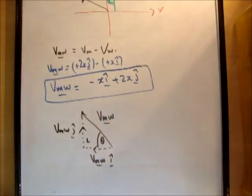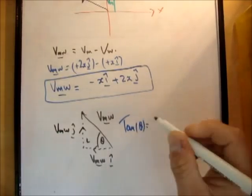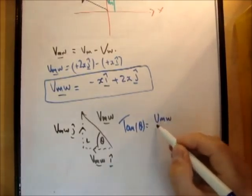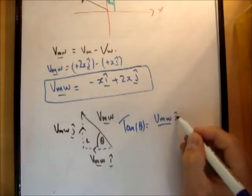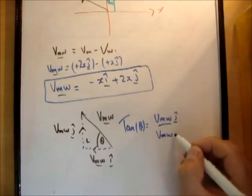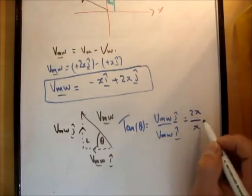So tan theta, as normal, is equal to vmw j-hat over vmw i-hat. And that turns out to be 2x over x, which is equal to 2. So therefore, the inverse tan of that turns out to be approximately 63 degrees.